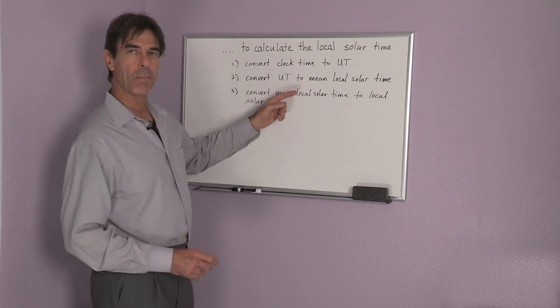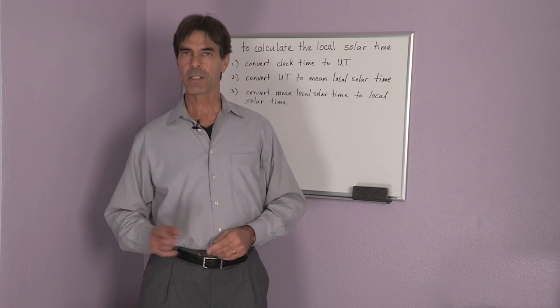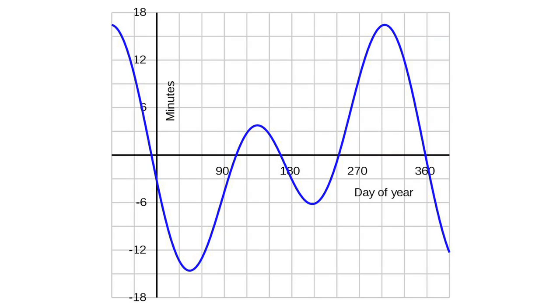Then this is only the mean solar time. The sun is not a very good clock. It sometimes speeds up and slows down during the course of the year. So we have to use something called the time equation to convert the mean local solar time to the local solar time. This is the time that a sundial would show.